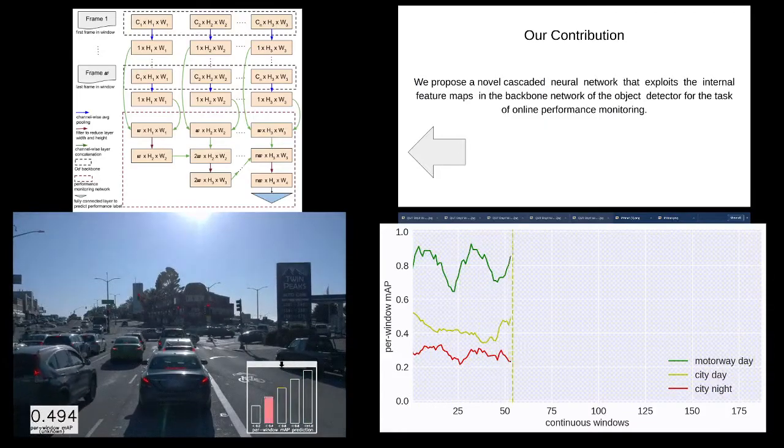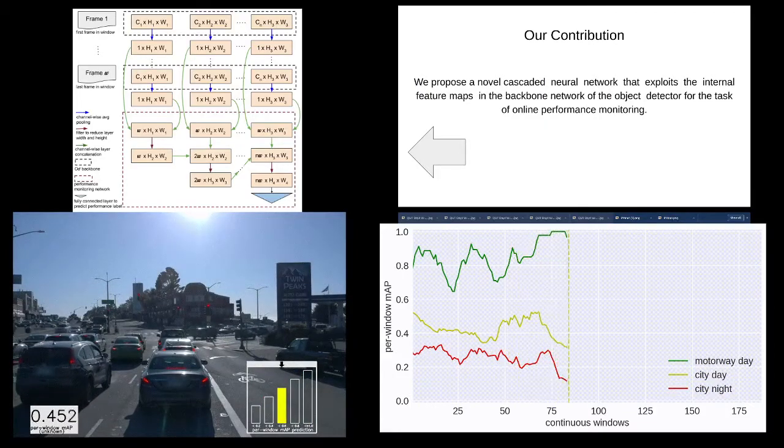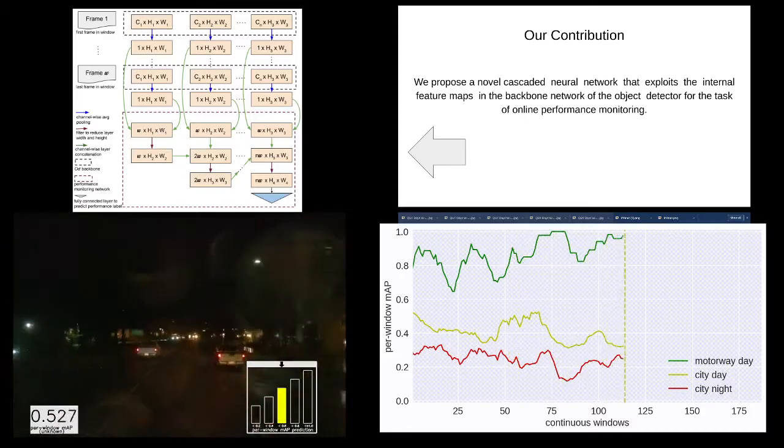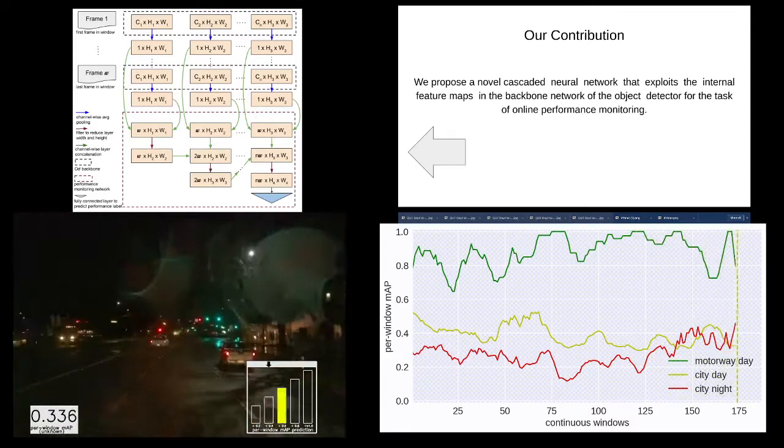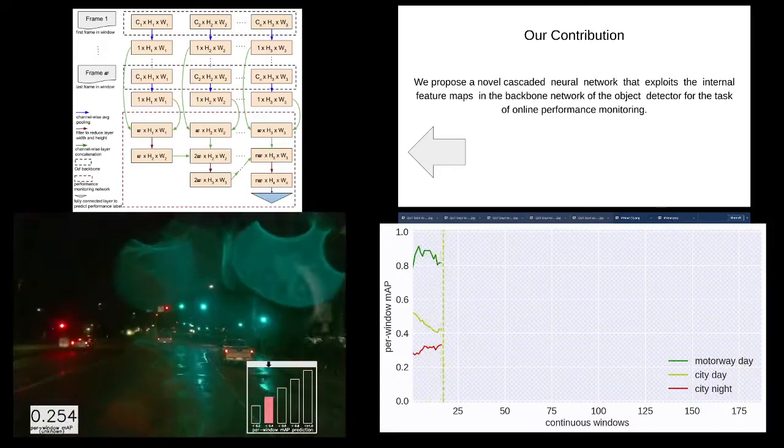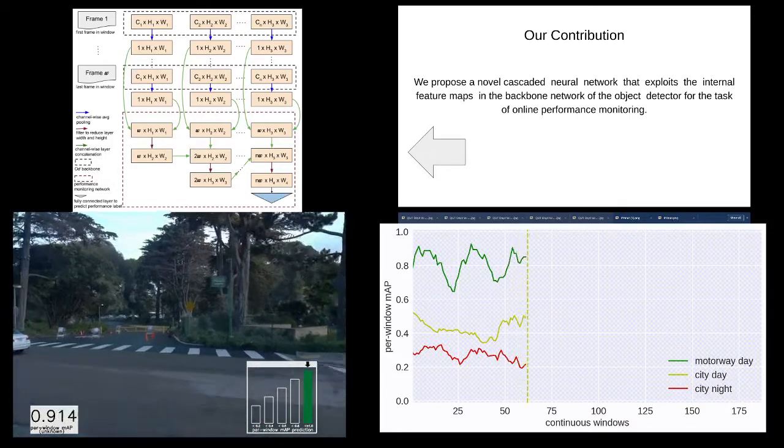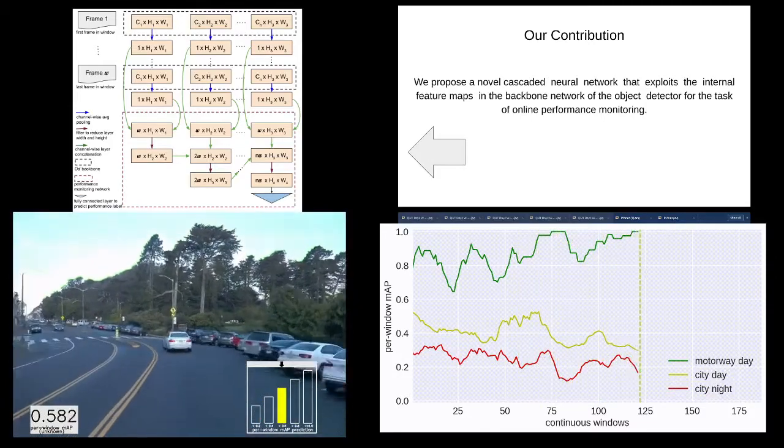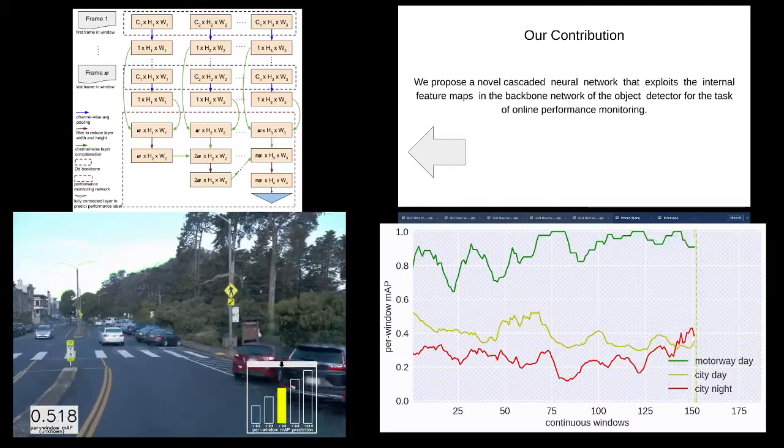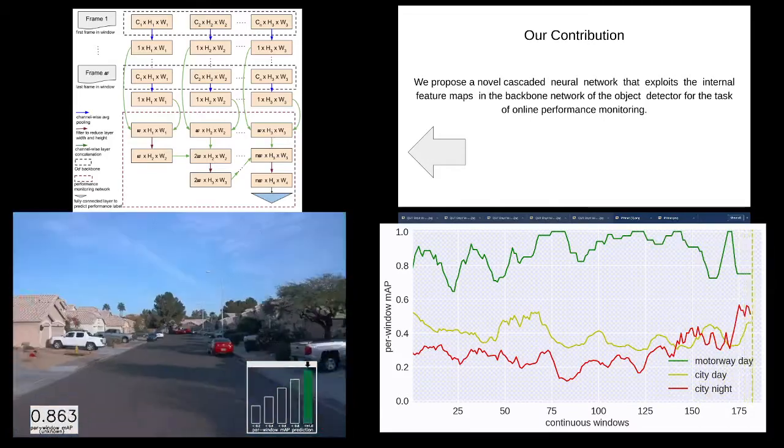We are proposing a novel cascaded neural network that explores the internal feature maps in the backbone network of the object detector for the task of online performance monitoring. This network extracts convolutional features from the underlying object detection backbone and uses them in a cascaded style to predict the likely MAP during deployment. The top left figure shows the architecture of our proposed network.